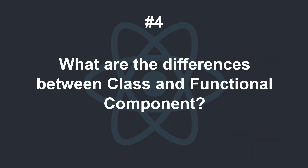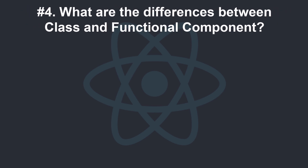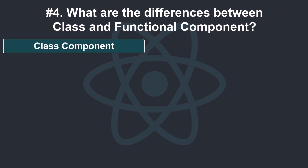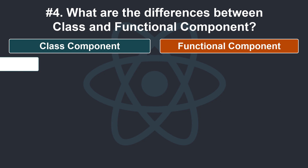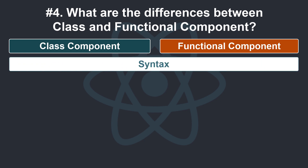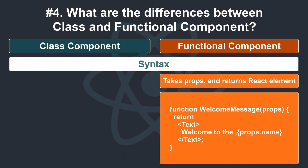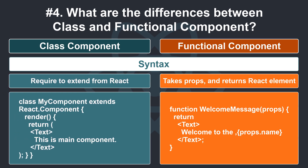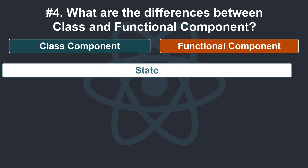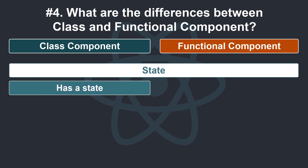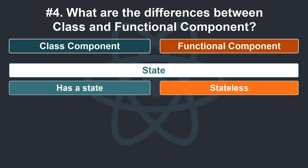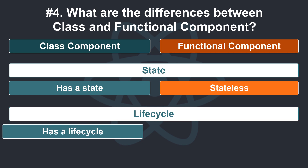What are the differences between class and functional components? The essential differences are: Syntax — the declaration of both components is different; a functional component takes props and returns a React element, whereas the class component requires extending from React. State — the class component has state, while the functional component is stateless, though the functional component can use the state hook. Lifecycle — the class component has a lifecycle, while the functional component doesn't have a lifecycle.